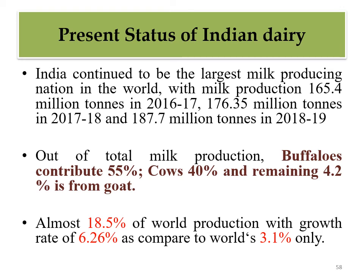India continues to be the largest milk producing nation in the world, with milk production of 165.4 million tons in 2016-17, 176.35 million tons in 2017-18, and 187.7 million tons in 2018-19. Out of total milk produced in India, buffalo contribute 55%, cow 40%, and the remaining 4.2% comes from goat.